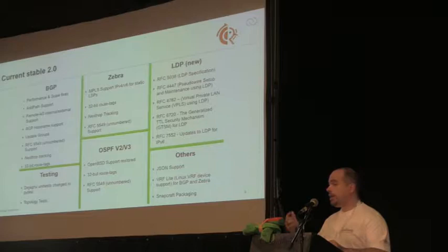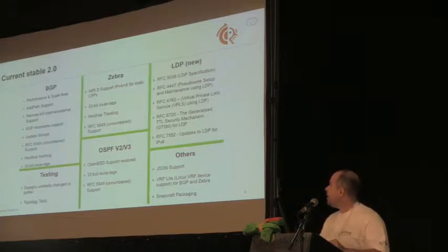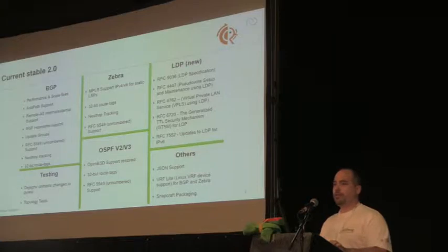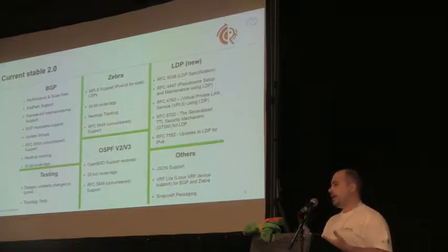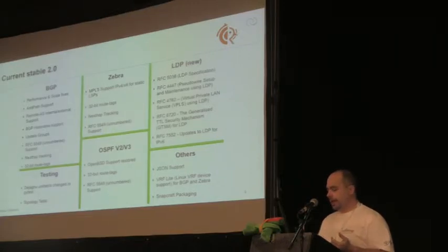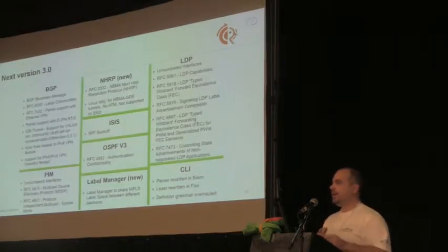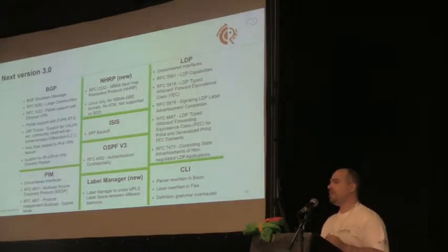LDP support was added, PIM support for multicast routing, JSON support, and unnumbered routing for both OSPF and BGP. There are a lot of new things. The idea was to have a new release called 2.1 or something, but there were so many additions that they decided to go to 3.0.